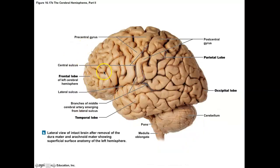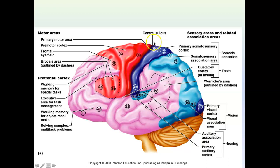Reviewing the lobes: the frontal lobe is visible with the central sulcus running through both sides. The first gyrus in front of the central sulcus is the primary motor cortex, also called the precentral gyrus. Behind the central sulcus in the parietal lobe, the first gyrus is the primary somatosensory cortex, also called the postcentral gyrus. The precentral gyrus initiates skeletal muscle contraction for voluntary control, while the postcentral gyrus is the first to receive sensory information from the body.